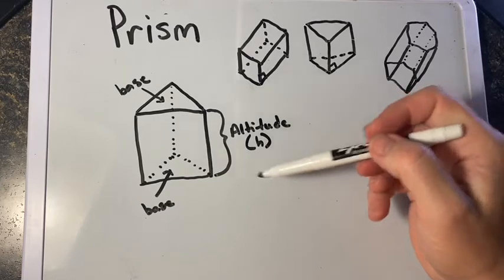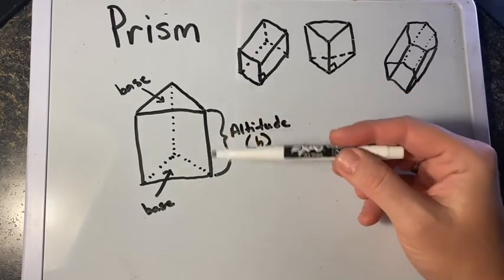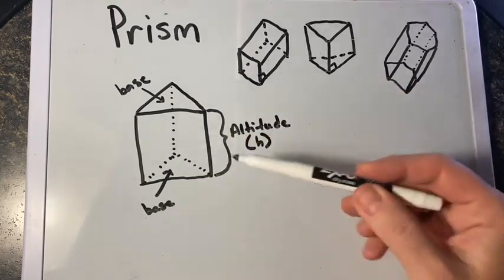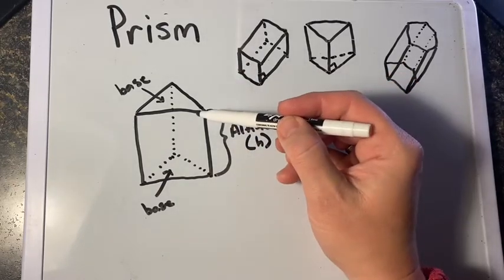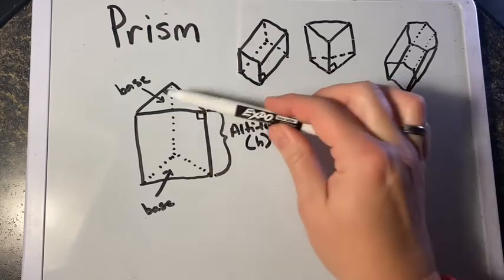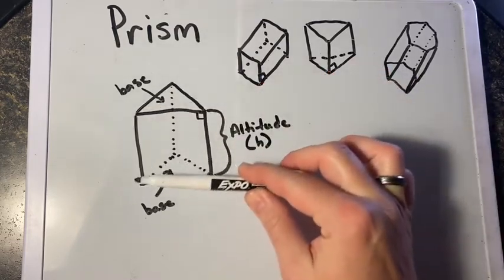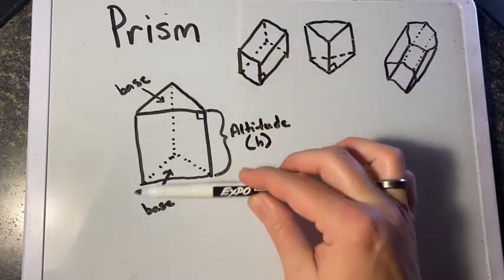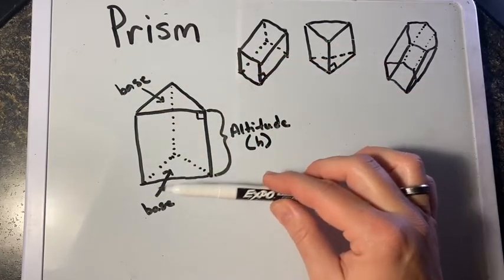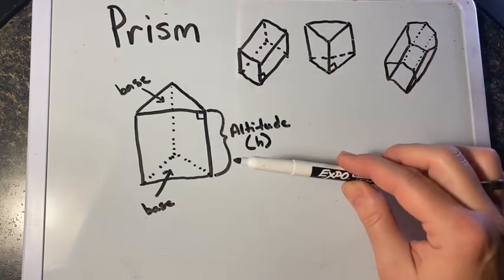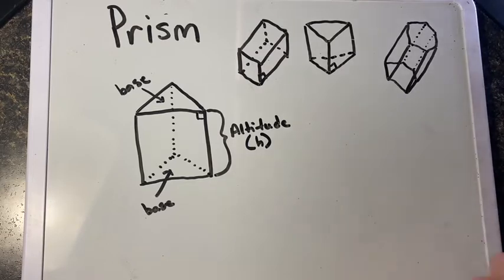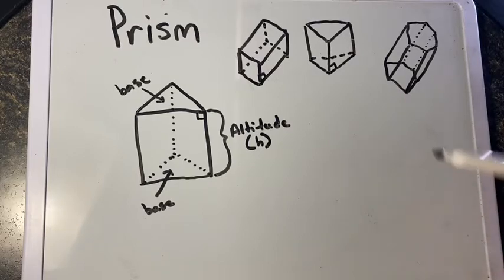The altitude of the prism is a segment perpendicular to the plane of the bases. So this lateral edge has to be perpendicular to the plane that each of the bases are on — it's perpendicular to each base, and these bases are parallel to each other. That is called the altitude or the height of the prism. Now there are a couple of formulas we're going to use for a prism: the lateral area and the total area.